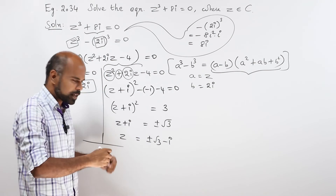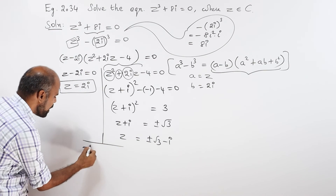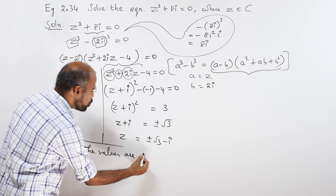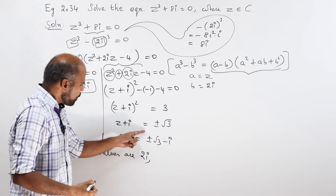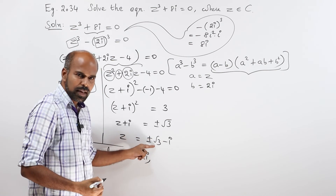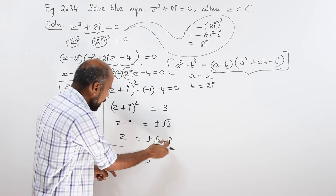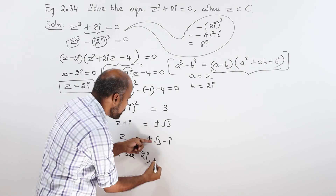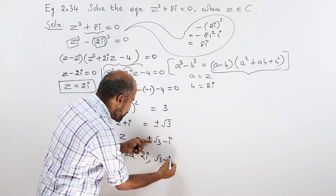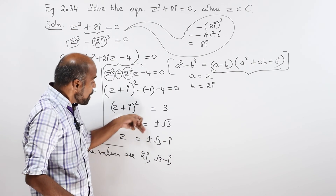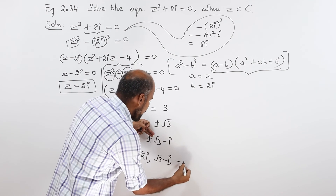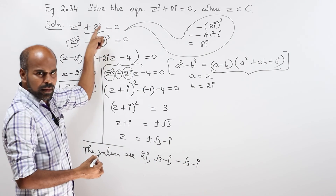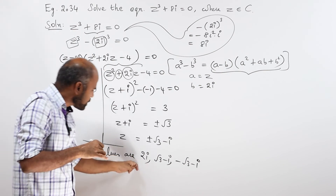So we can make this conclusion. The values are: z equal to plus 2i, and z equal to plus or minus root 3 minus i. So we get three solutions in total. Yes, three solutions.